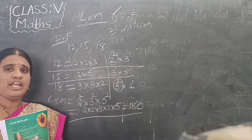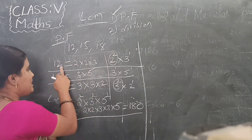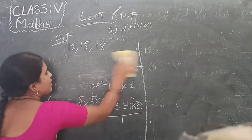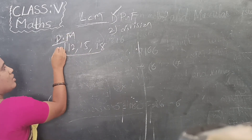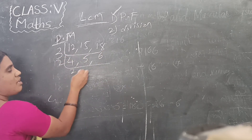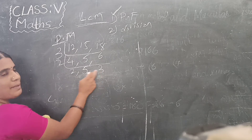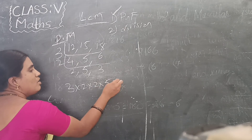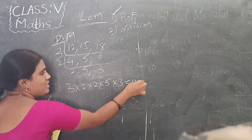In the same way, you have to do the division method also. Division method: 3 fours are 12, 3 fives are 15, 3 sixes are 18. 2 twos are 4, 5. Now using the 2 table: 2 threes are 6. These are prime numbers so we stop. Then do the multiplication: 3 times 2 is 6; 6 times 2 is 12; 12 times 5 is 60; 60 times 3 is 180. Same answer.